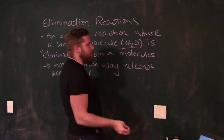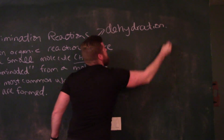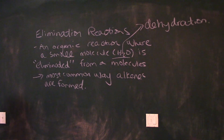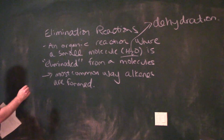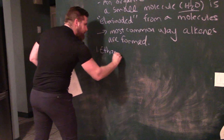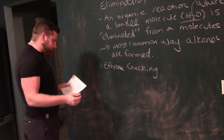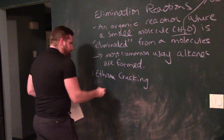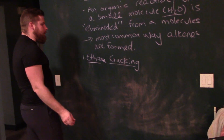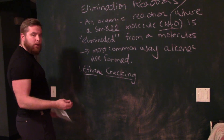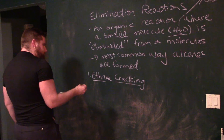Think about this: if adding water is a hydration reaction to make alcohols, then the reverse is dehydration. Let me give you examples of these elimination reactions. Ethane cracking — this is how we can initially make alkenes. This is a specific type of hydrocarbon cracking: ethane cracking makes ethene, and that is the base unit to make polymers for plastics — the ethylene monomer. So ethane cracking is a form of elimination, and I'll also call this dehydrogenation because we're removing hydrogen.